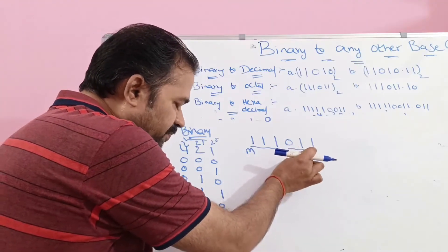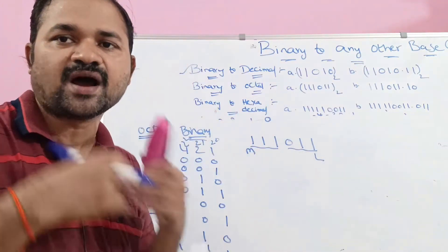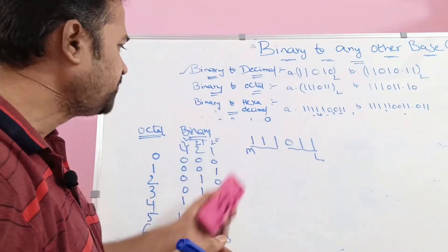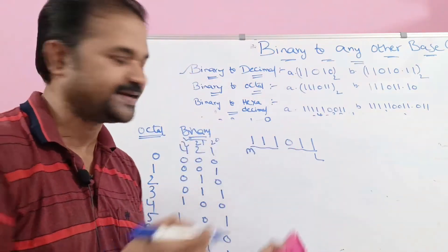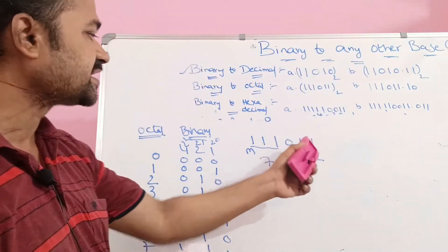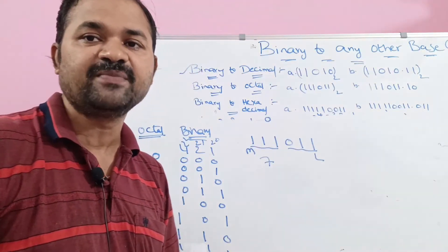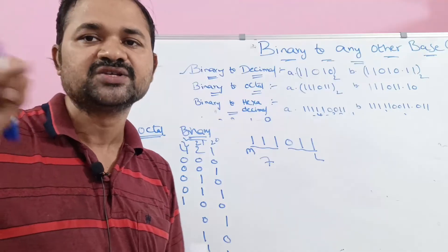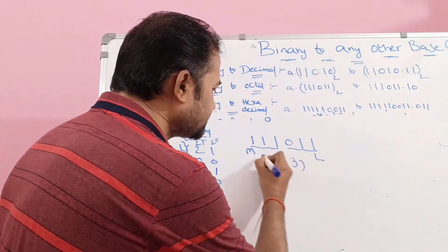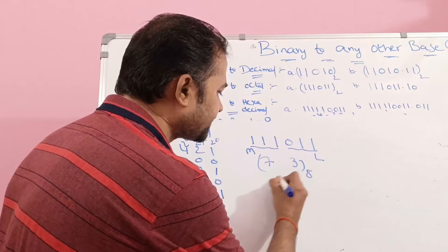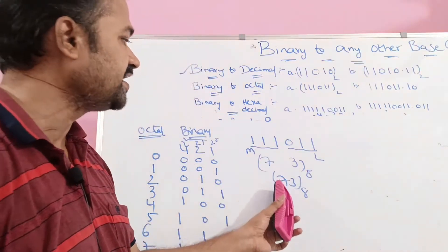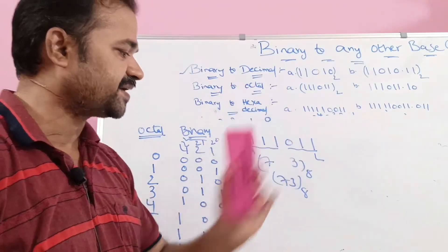Each group of 3 bits represents one octal digit. 111 = 4+2+1 = 7. 011 = 2+1 = 3. So the octal result is 73 base 8. That is the octal equivalent of binary 1110011.